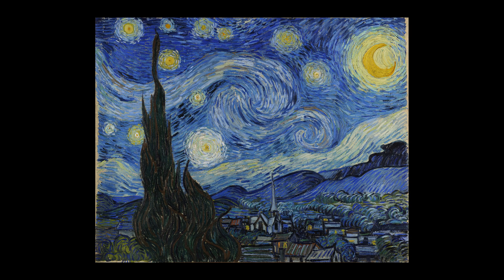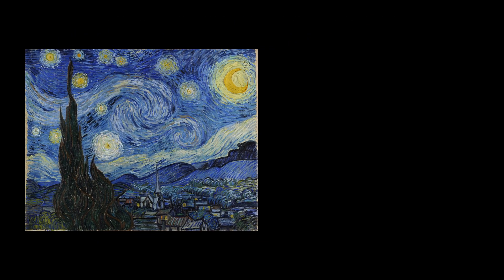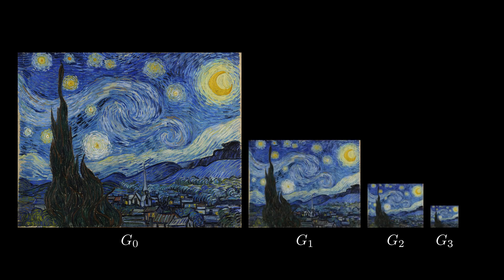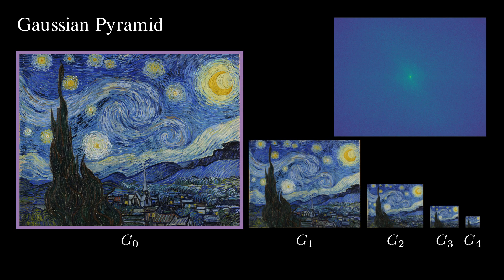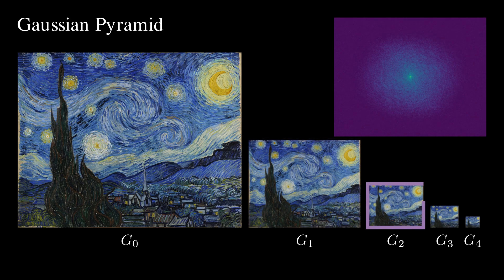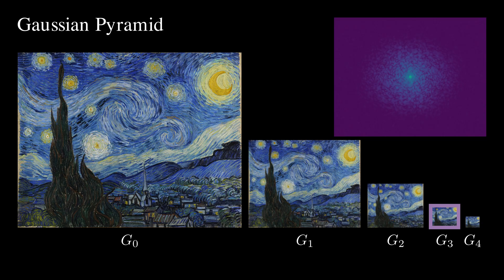The process of repeatedly blurring and downsampling images allows us to construct a sequence of images with varying spatial resolution. This is called a Gaussian pyramid. Using the Fourier transform, we can visualize how the frequency content changes at different levels. As we go to lower resolutions, the image frequencies shift toward lower values. This technique is useful for scale-space analysis, feature extraction, object detection, and coarse-to-fine estimation.